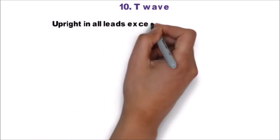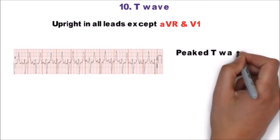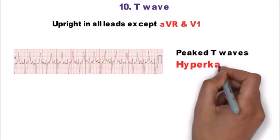Coming on to last step i.e. T-wave. It is upright in all leads except AVR and V1. Tall, narrow, symmetrically peaked T-waves are commonly seen in hyperkalemia.